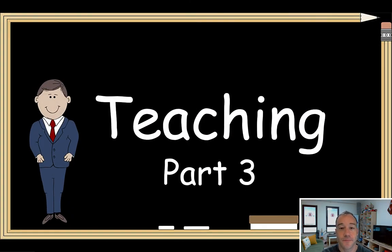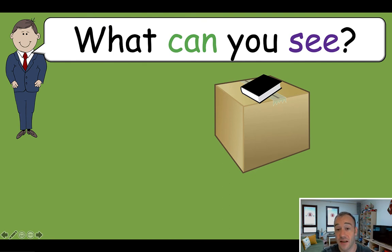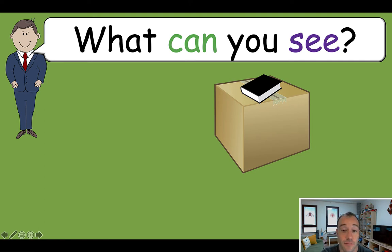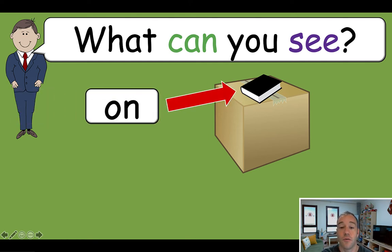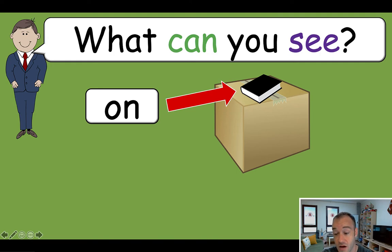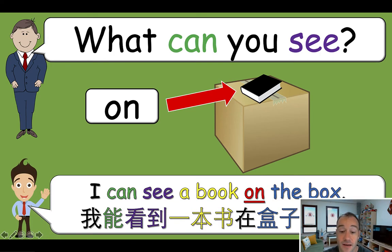Alright, let's go on to teaching part three. The next part of the lesson was not in the original lesson — I wanted to add this extra slide: "What can you see?" Just see what they say. In my original lesson I asked them without the slide, but it's better to have the slide so they can see the English. Some students will raise their hand and try to say a sentence, then you can show them — prompting them with a word — and they should say something like "I can see a book on the box."